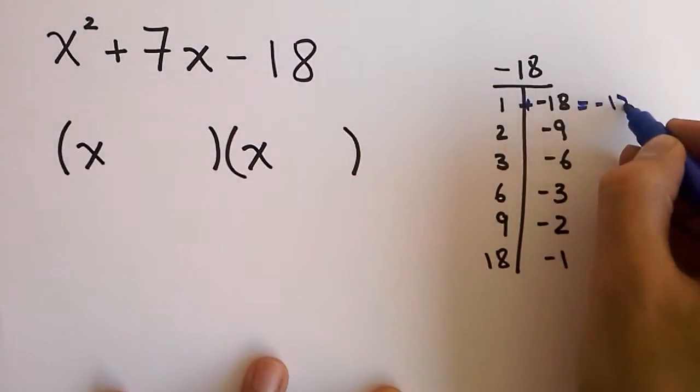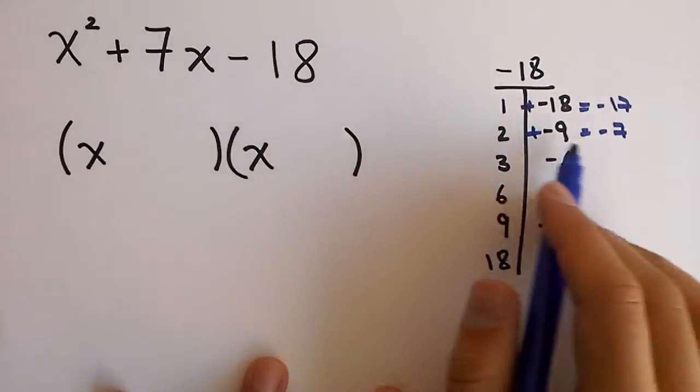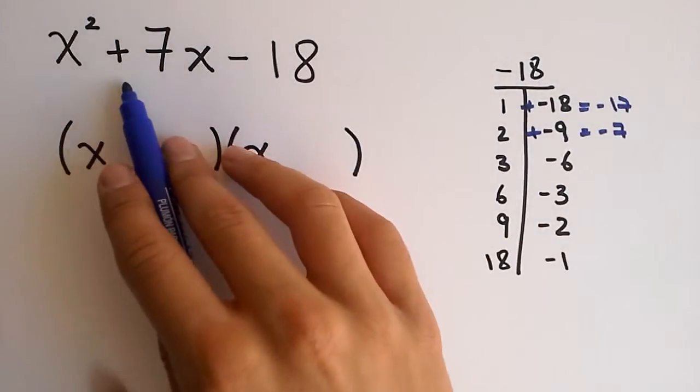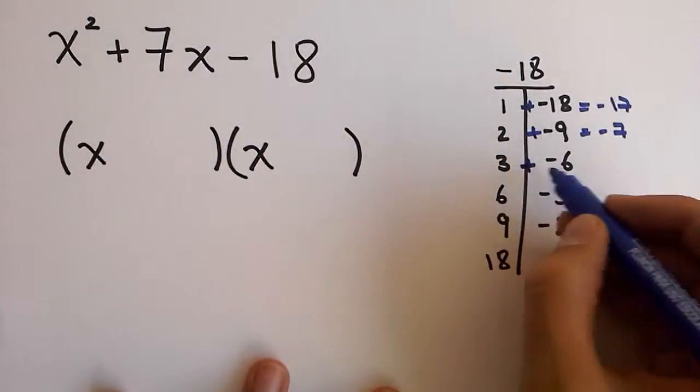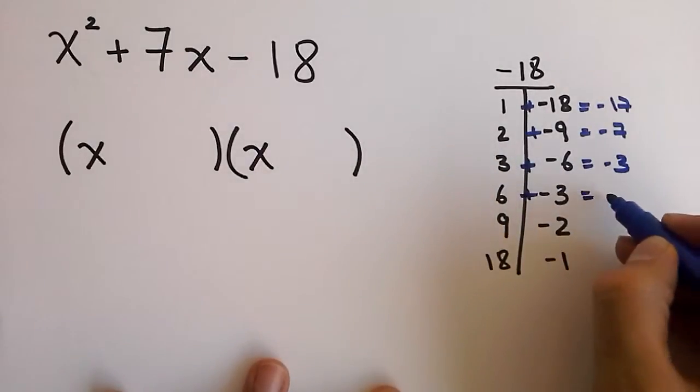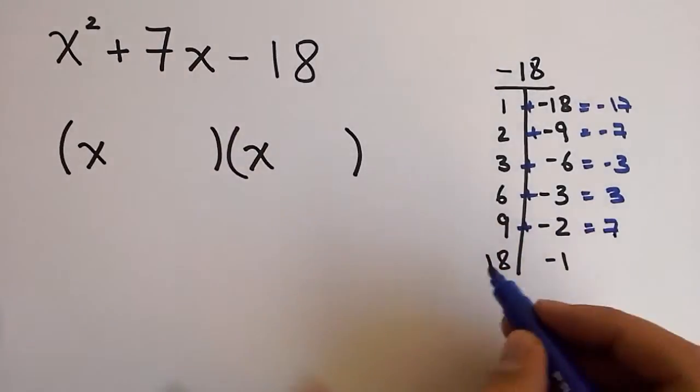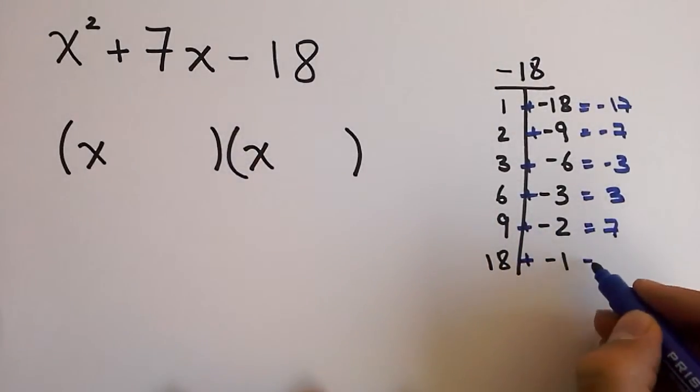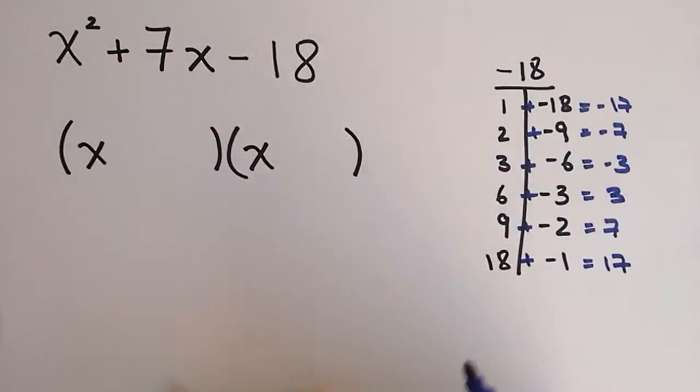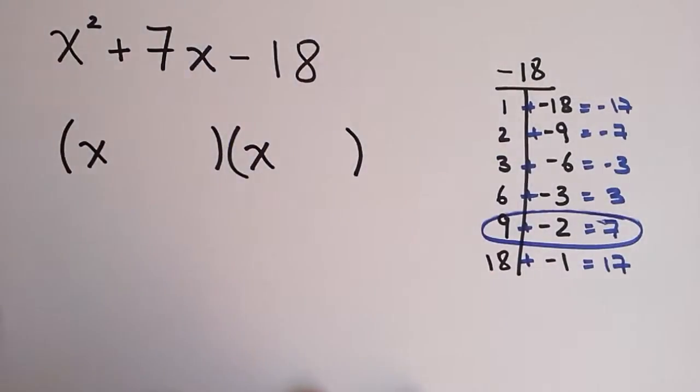So if you start adding, you obtain negative 17, negative 7... 3 minus 6 is negative 3, 6 minus 3 is positive 3, 9 plus negative 2 is 7, and 18 plus negative 1 is 17. So you see that the pair that gives you negative 7 are 9 and negative 2.